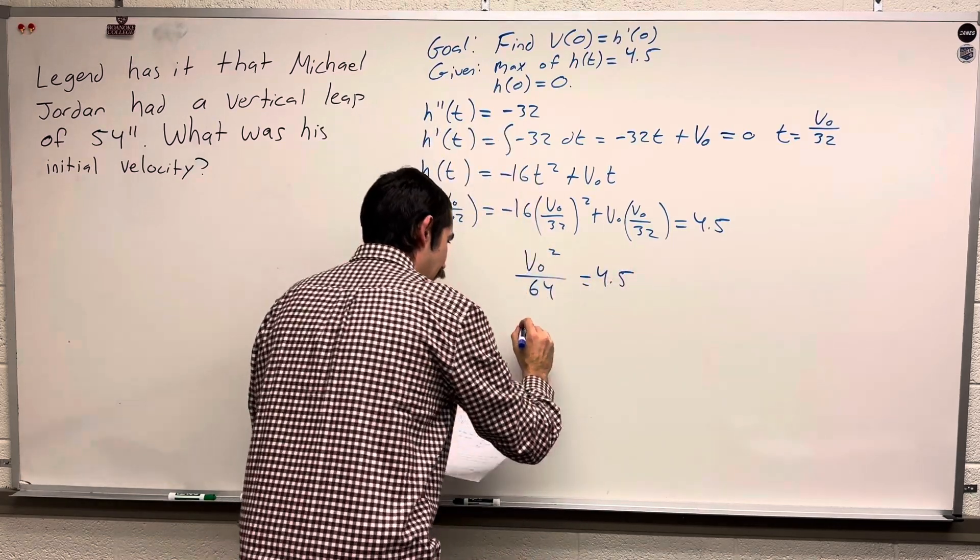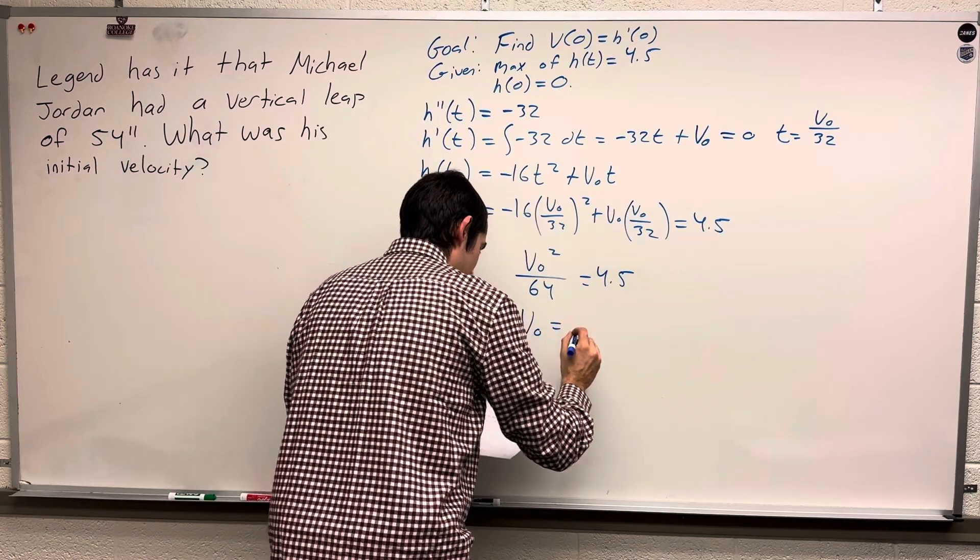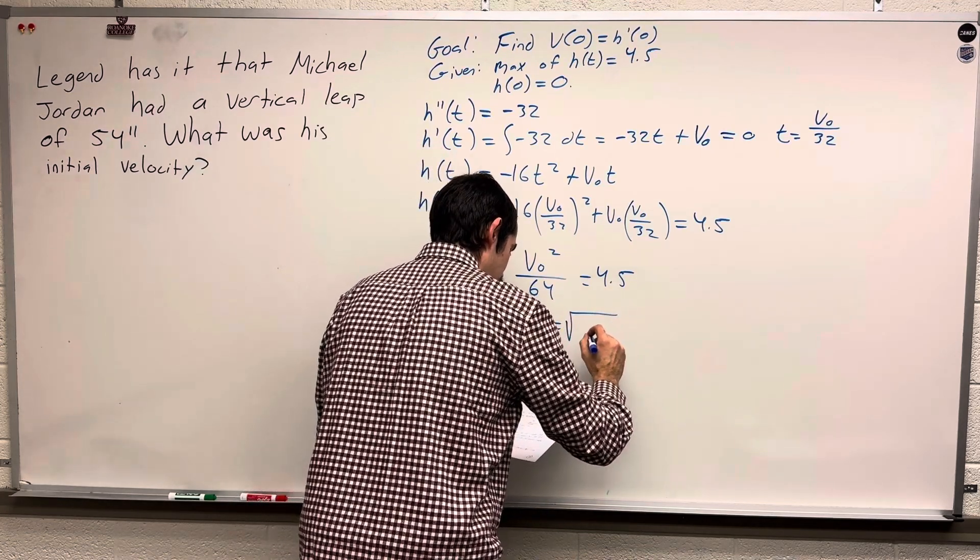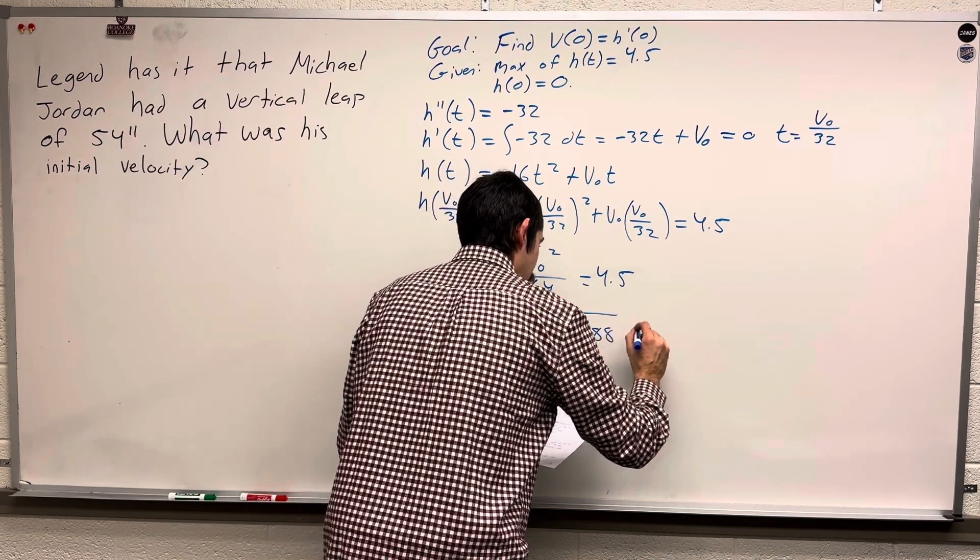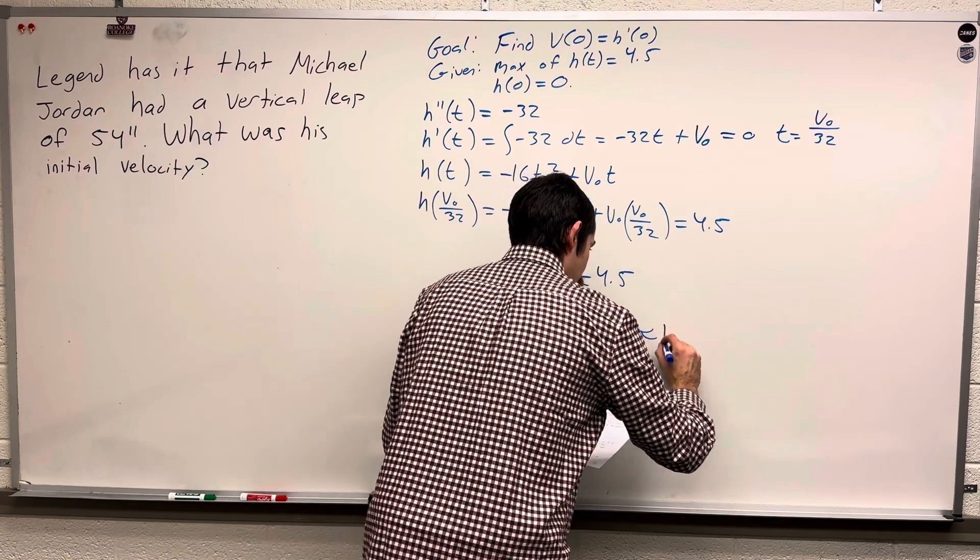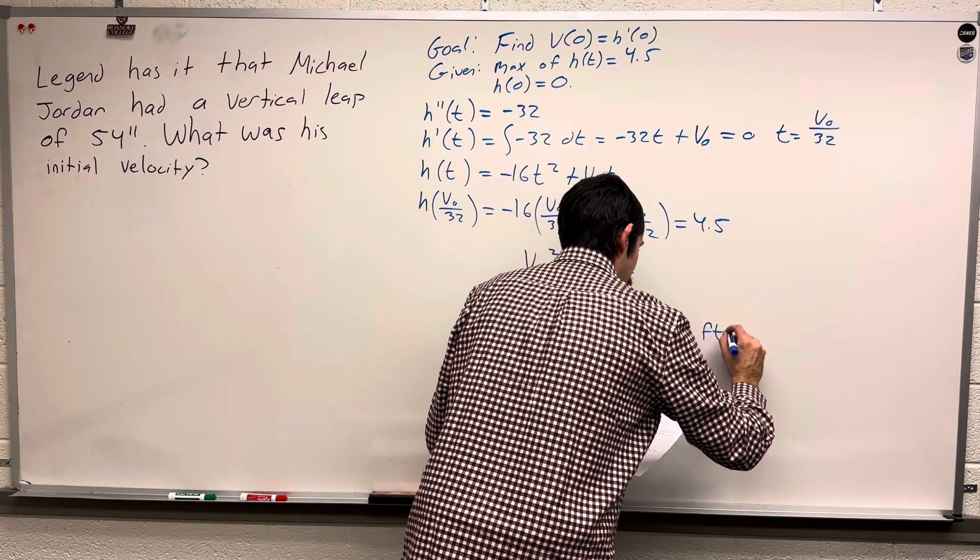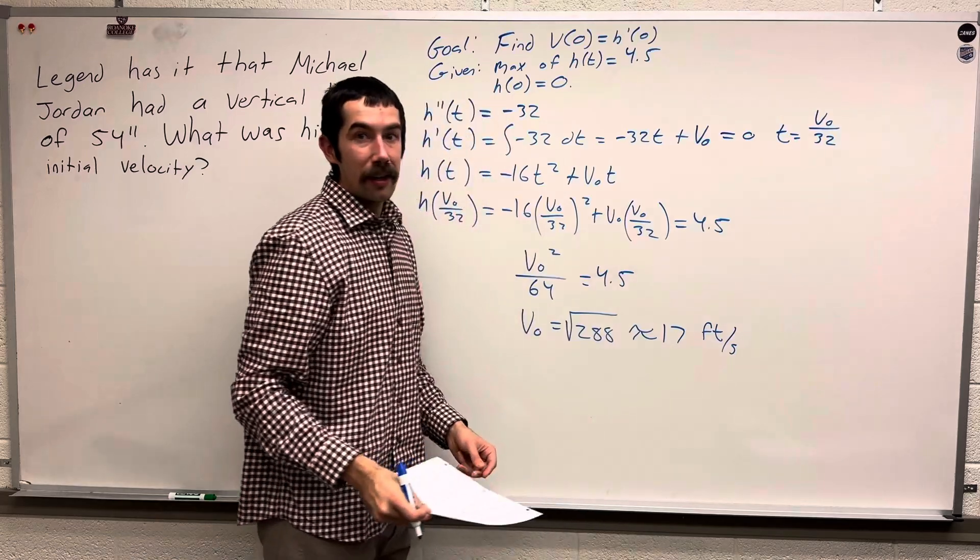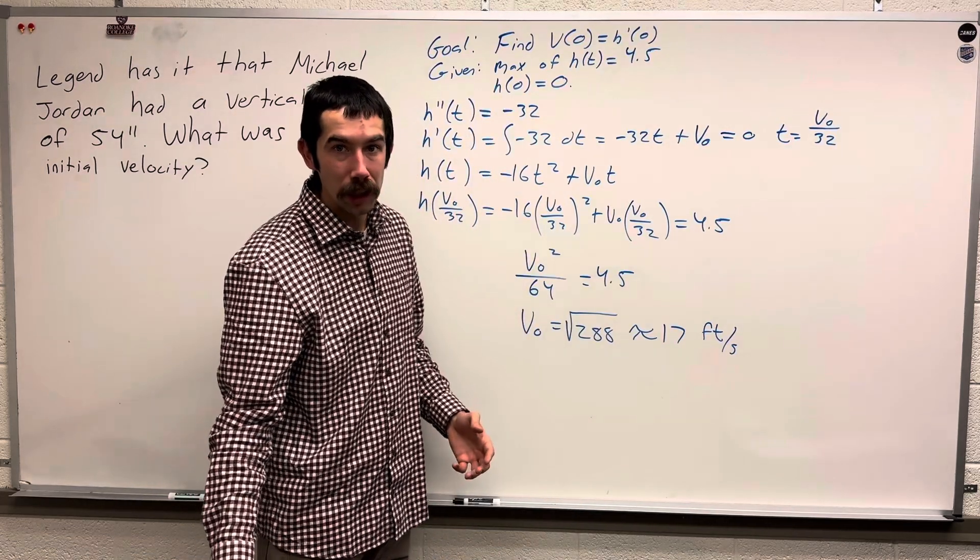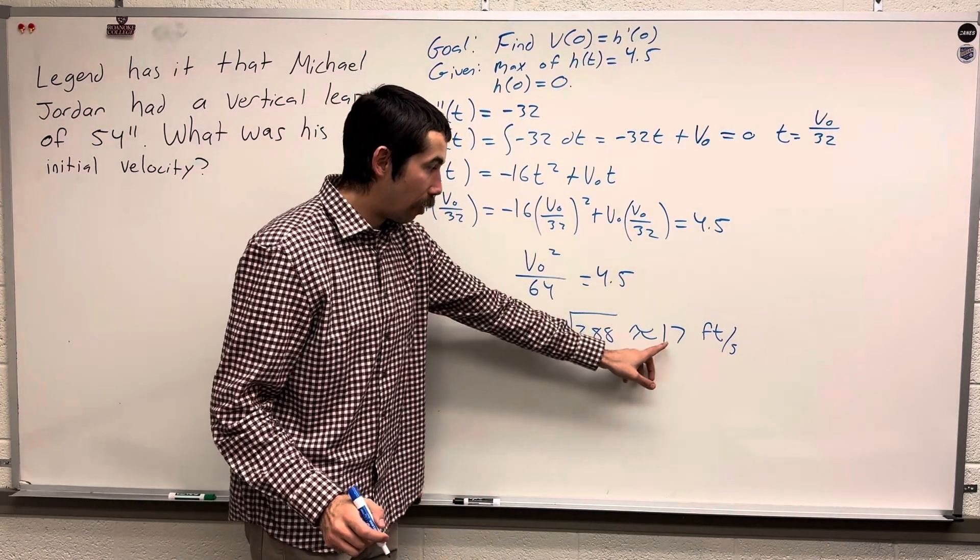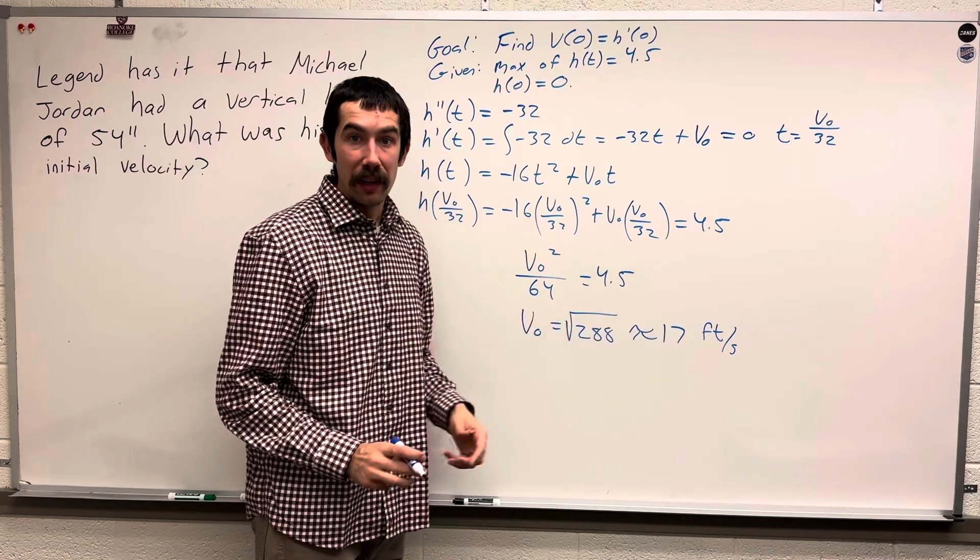Another way to say that is that Michael Jordan's initial velocity would have to be the square root of 288, which is approximately 17 feet per second. So if MJ was truly able to jump four and a half feet, he would have to jump at 17 feet per second.